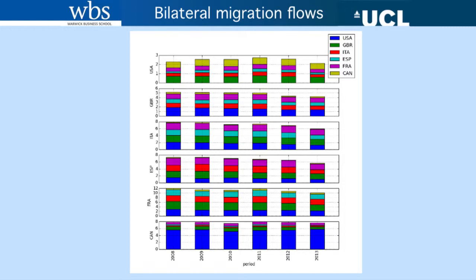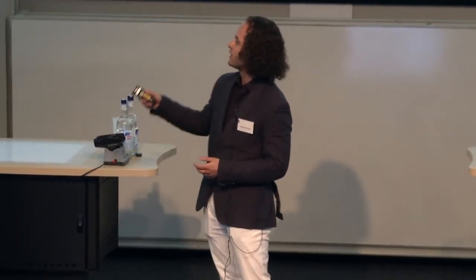These are the bilateral migration statistics from 2008 to 2013. Every row represents a country of origin, every bar is a different year, and within each bar the color-coded segments show countries of destination. For example, users from the USA generally don't move around as much — about 2–3% are judged as relocating, compared to 10% or even 12% in the case of France. Also, Canadian users are very likely to relocate to the USA, but if they come to Europe they tend to go to Britain or France, not much to Italy or Spain — which makes sense given culture and distance.